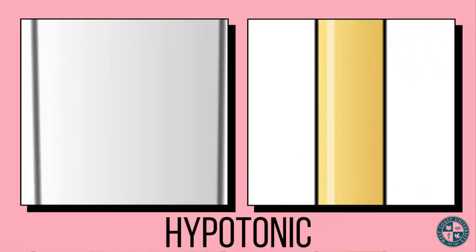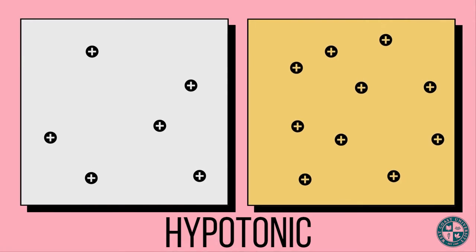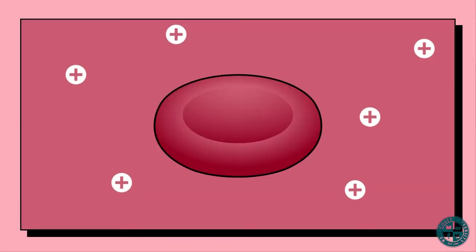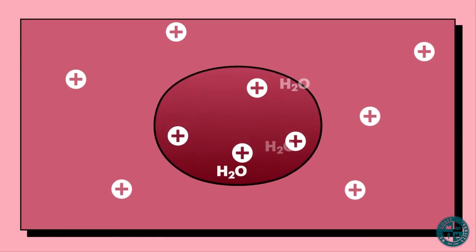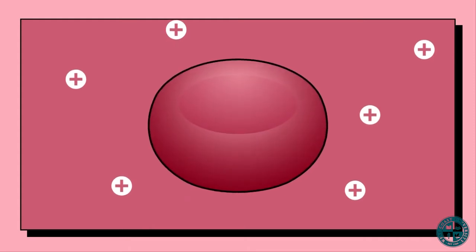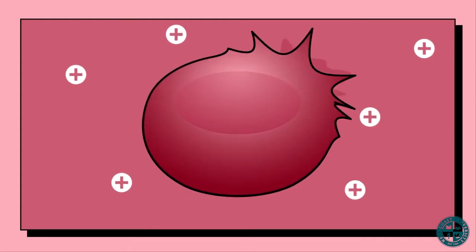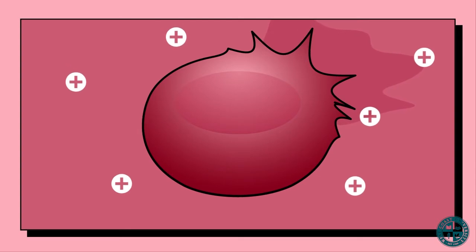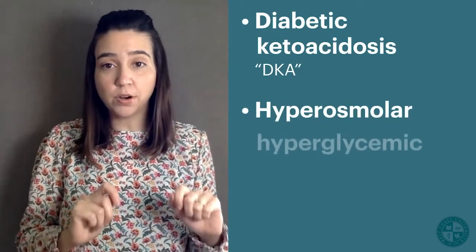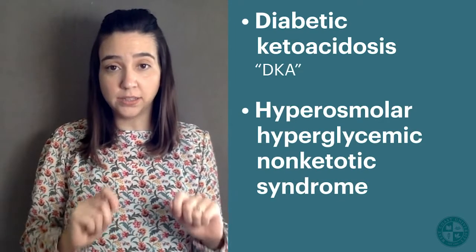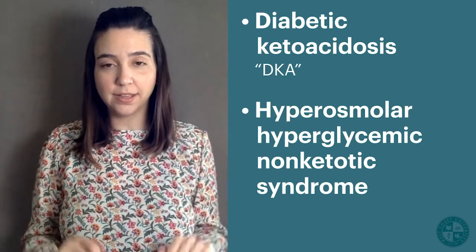Hypotonic solutions have a lower osmolarity than plasma. This solution will move fluid from the intravascular space to the intracellular fluid, causing cells to begin to swell. If too much fluid is moved into the cell, cellular lysis could occur. This type of solution is predominantly used to treat conditions that cause intracellular dehydration, such as diabetic ketoacidosis (DKA), hyperosmolar hyperglycemic non-ketotic syndrome, and hypernatremia.